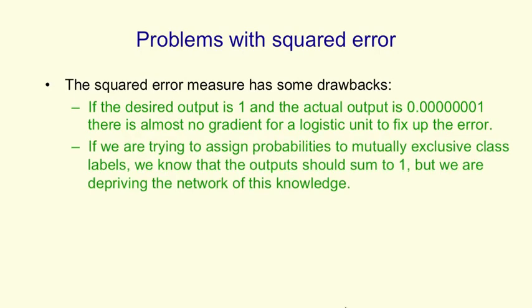Also, if we're trying to assign probabilities to mutually exclusive class labels, we know that the output should sum to 1. Any answer in which we say the probability that it's an A is 3/4, and the probability that it's a B is also 3/4 is just a crazy answer. We ought to tell the network that information. We shouldn't deprive it of the knowledge that these are mutually exclusive answers.